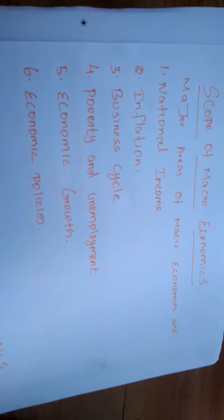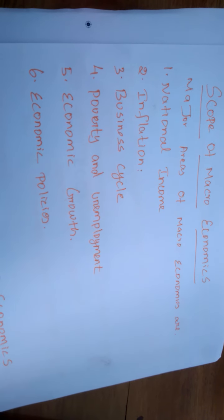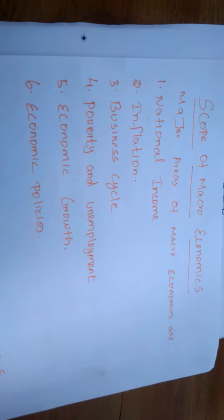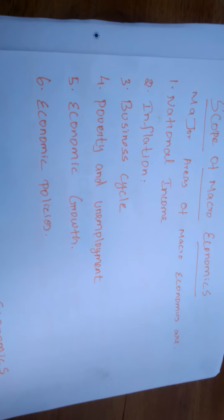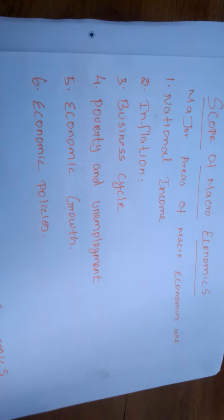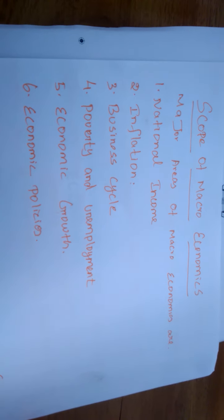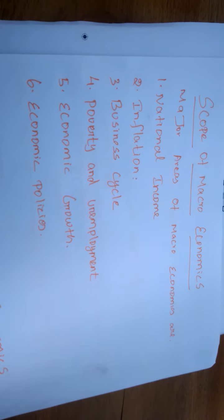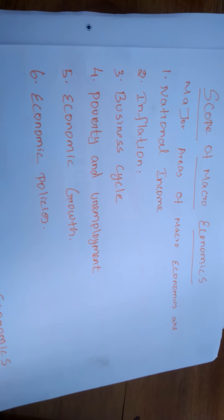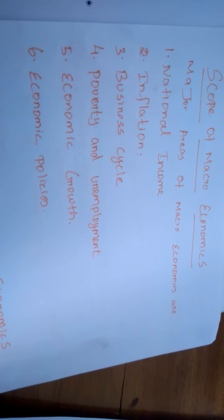Now the scope of macroeconomics. The study of macroeconomics has a wide scope and covers major areas. The first major area is national income. The measurement of national income and its composition by sectors are basic aspects of macroeconomic analysis. The components we studied last year include GDP, GNP, NNP, NNP at factor cost, disposable income, personal income, and per capita income — all called components of national income.